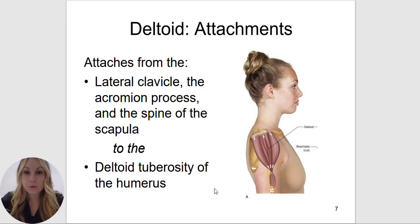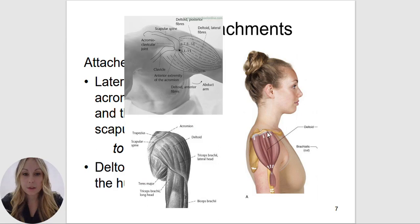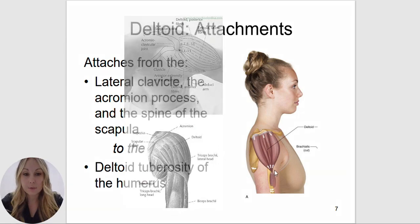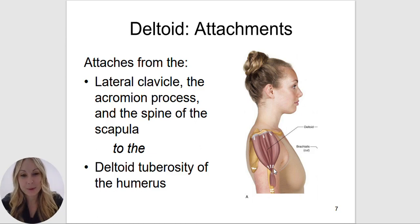Middle deltoid will be assisting in abduction, and the posterior deltoid will be doing extension. It attaches from the lateral clavicle, the acromion process, and the spine of the scapula to the deltoid tuberosity of the humerus. If you are an acupuncture student, there are a couple of points along the anterior acromion, posterior acromion, and around the deltoid that you will need to memorize — something you should keep in mind when palpating this muscle.